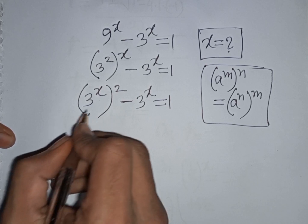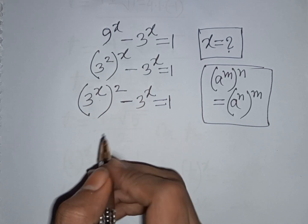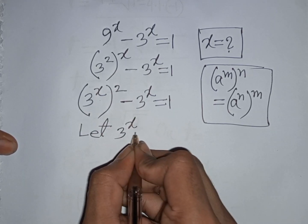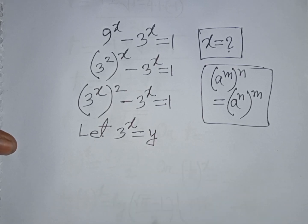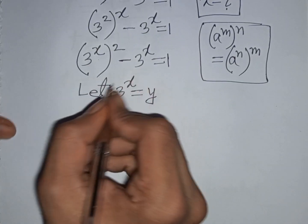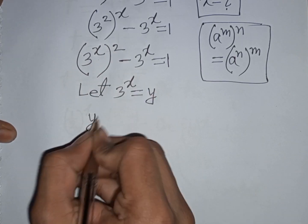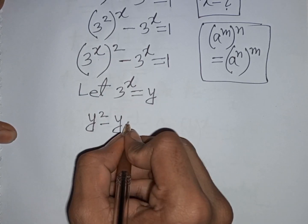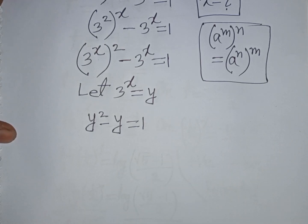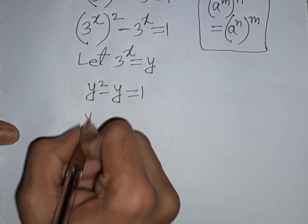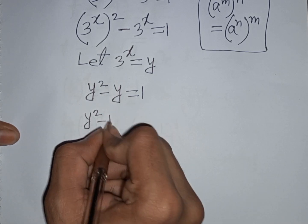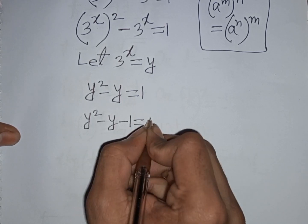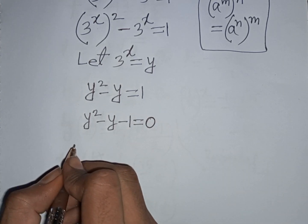We notice that 3^x appears in both terms. So let y equal 3^x as a substitution. Our equation becomes y squared minus y equals 1, and rearranging by moving 1 to the left side gives us y squared minus y minus 1 equals 0.